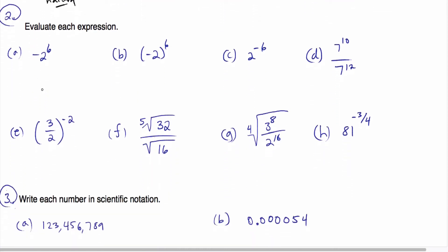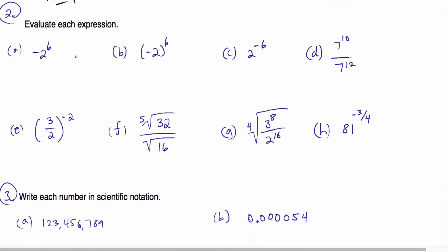Now in question two, we're evaluating these expressions. You can see we've got some exponents here. What do these exponents mean? They mean simply this: take 5 squared — this means you write 5 times itself twice, so you get 25. As another example, if you write 3 cubed, that's 3, which is the base, written 3 times because that's the exponent, and so you would get 27.